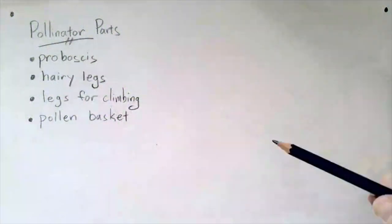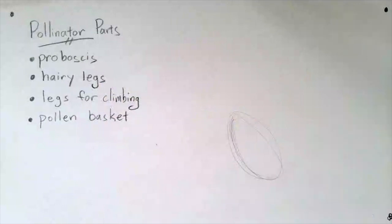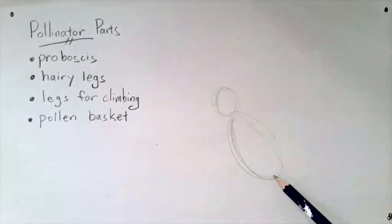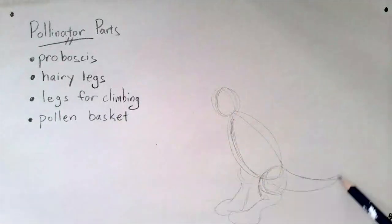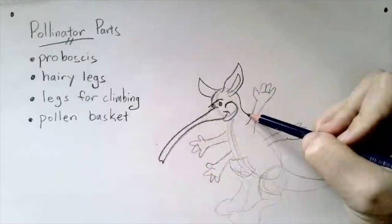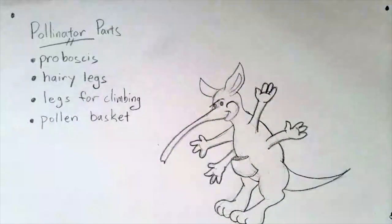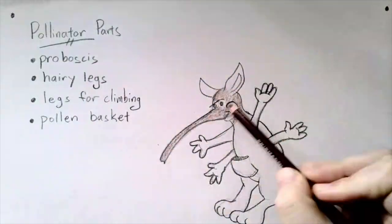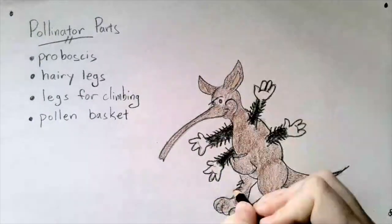Now that I've got some ideas, I'm going to start sketching in some basic shapes for my drawing, just to figure out where the different parts will go. I'm not too detailed yet, but once I have those basic parts in, then I'm going to draw those details that I thought of. Now I have a pretty crazy looking pollinator that's part kangaroo, part chimpanzee, and part anteater.